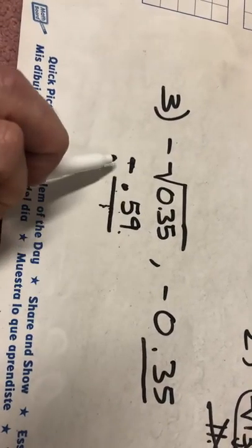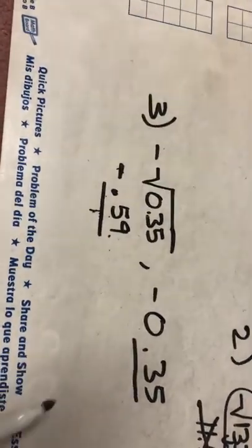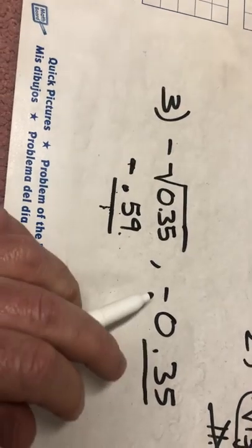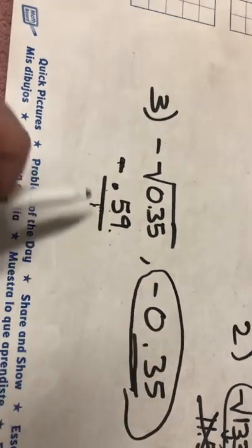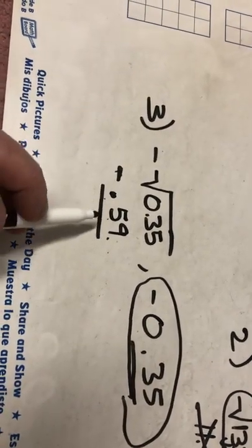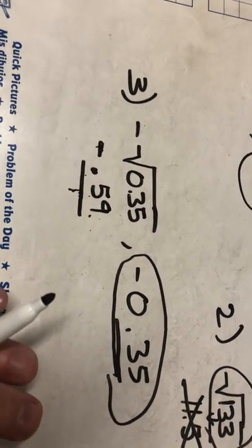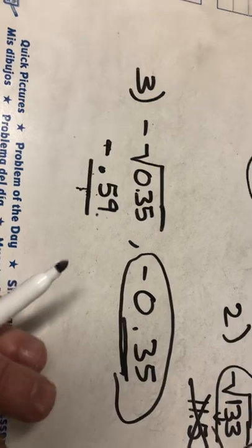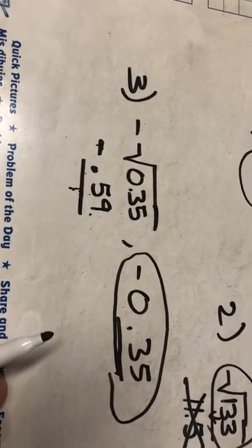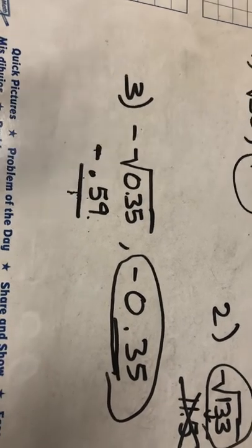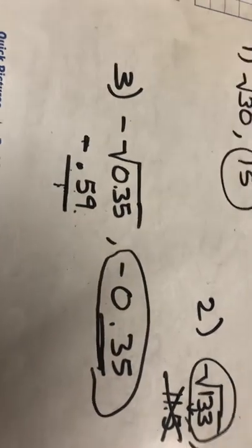But remember these are negative numbers, and with negative numbers the smaller the actual digits, the bigger the number is. So actually negative 0.35 is actually bigger than negative 0.59, just like the same idea that negative 2 is bigger than negative 4, closer to 0 on the number line. All right, we'll talk more about this, answer any questions you need during our zoom time Thursday morning April 23. All right, we'll talk to you later 7th grade, bye.